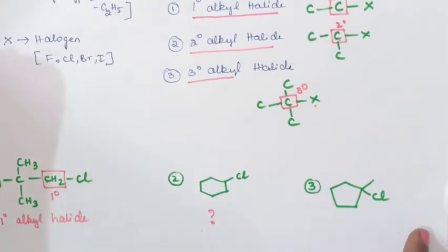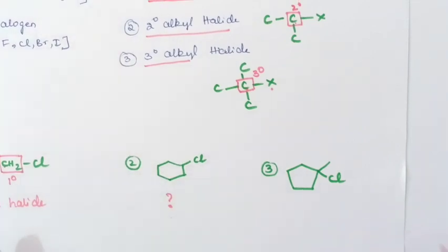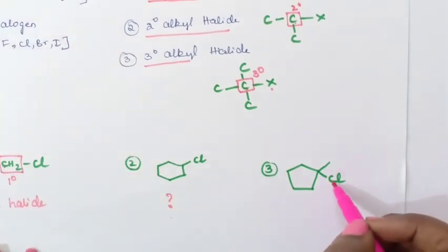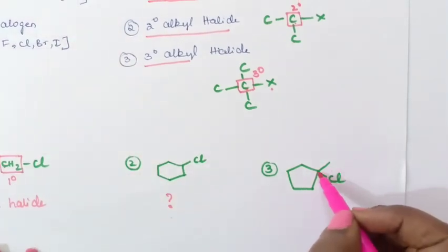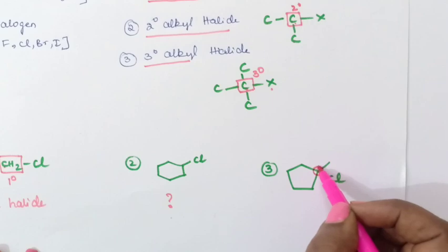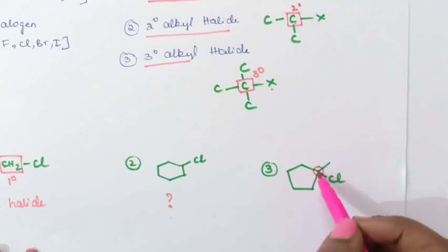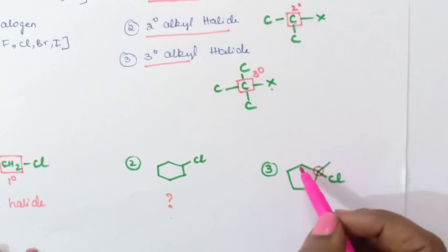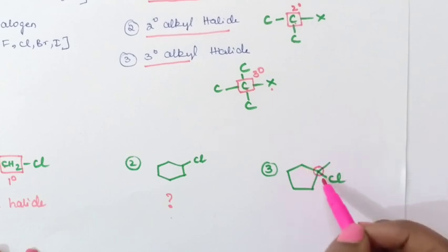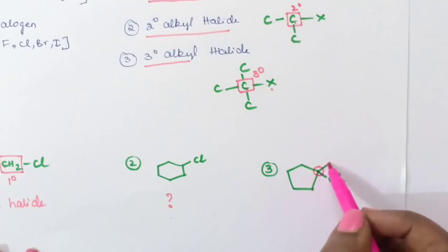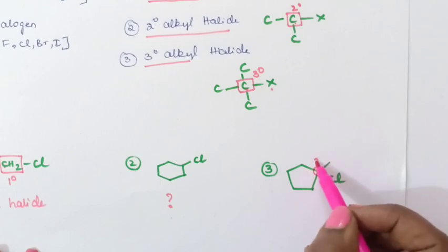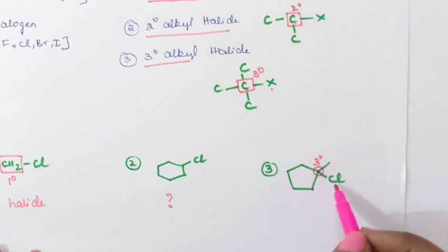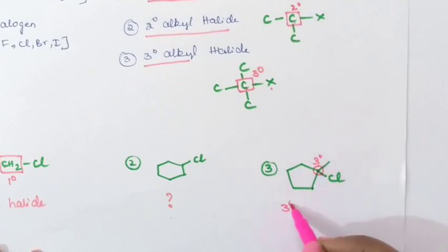Now we will see the third example. Here, this is the halogen, which is connected to this carbon. This carbon is connected to one carbon atom here, a second carbon atom here, and a third carbon atom here. So this is a tertiary carbon. If a halogen is connected to a tertiary carbon, it is called a tertiary alkyl halide.